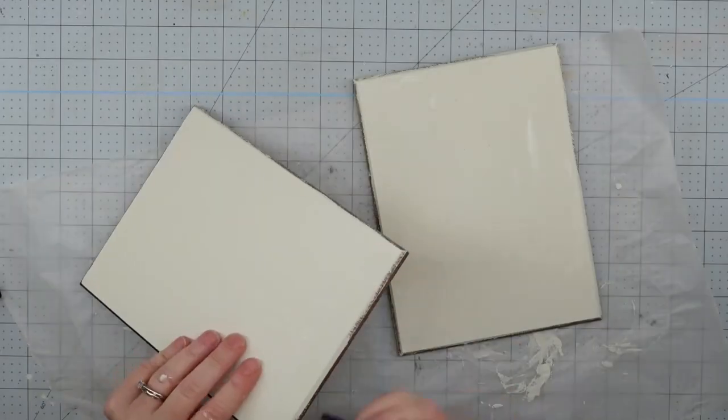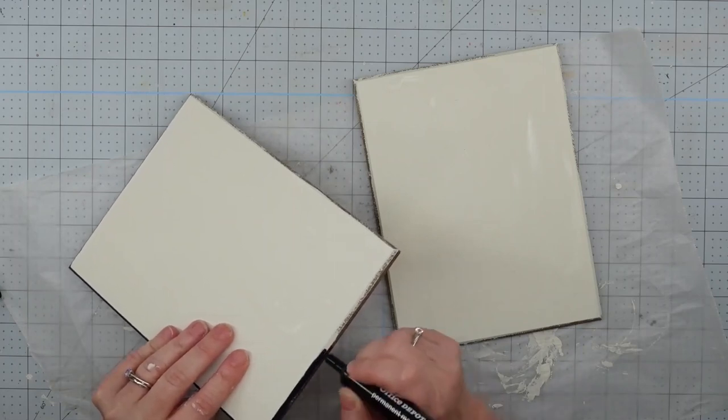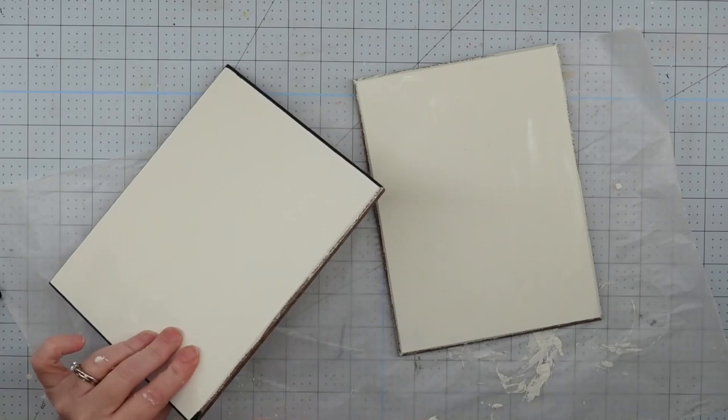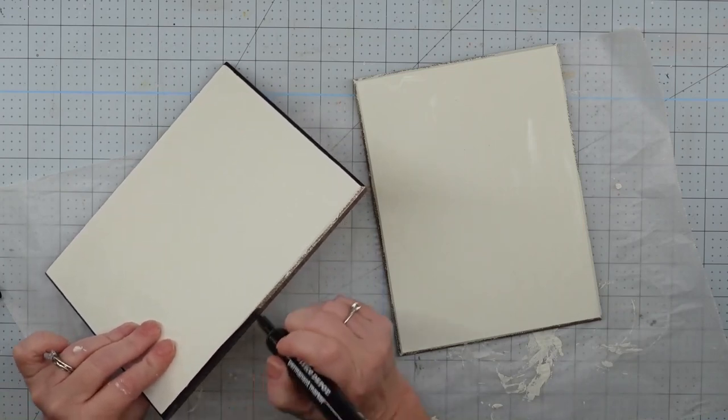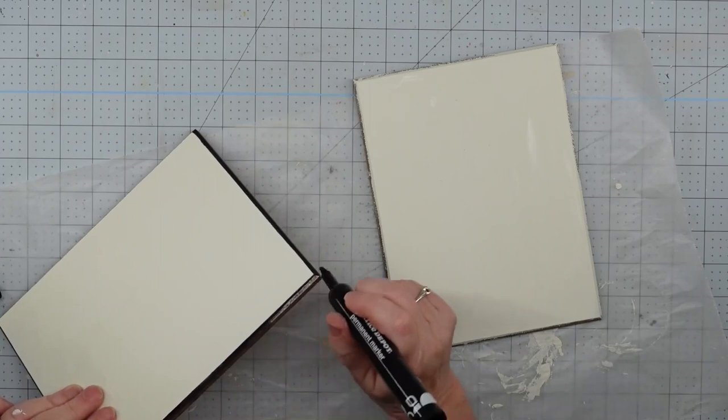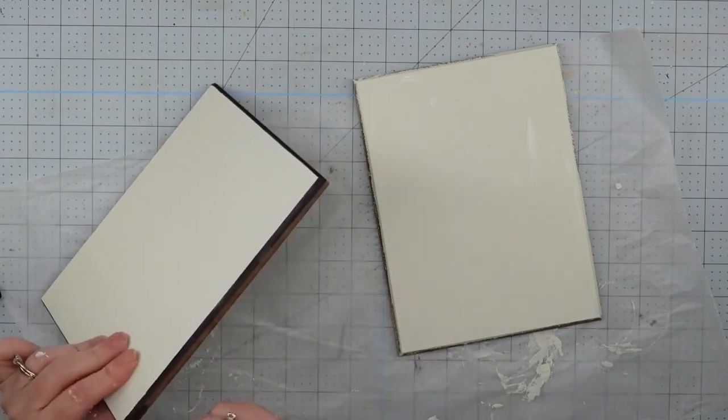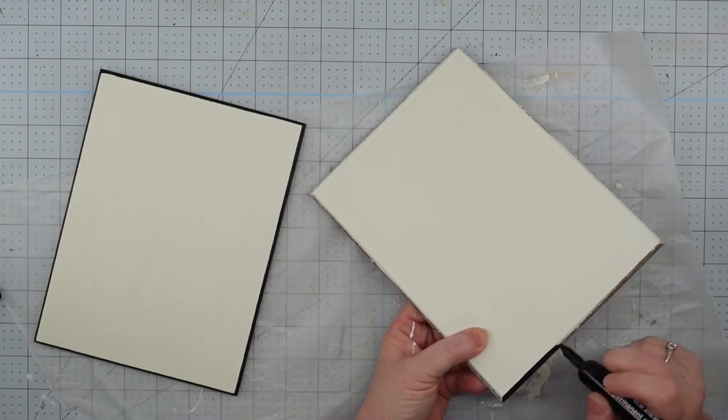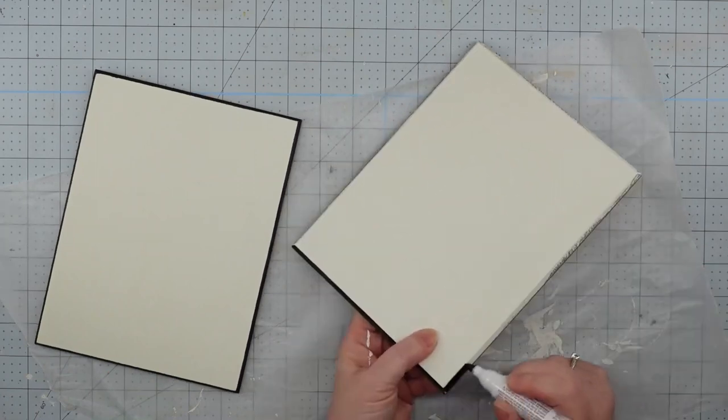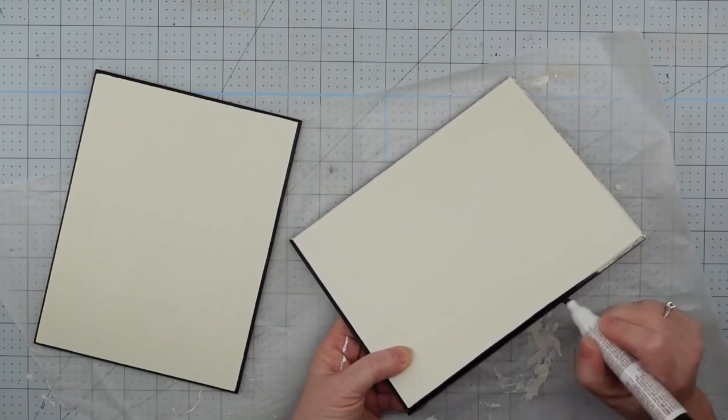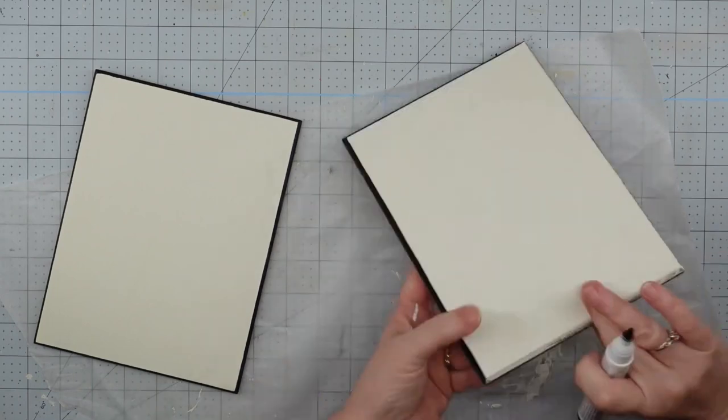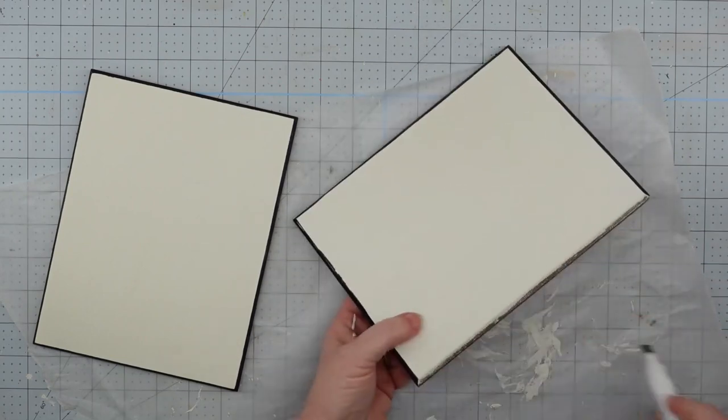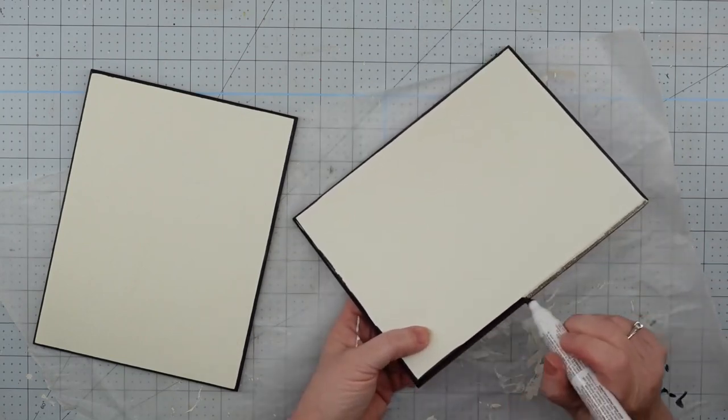Once our paint was dry, I wanted the sides of this to be black. I started to use paint and a paintbrush, but I was afraid that I would bleed it over to the top. You know how your brush kind of bleeds over—you can see that it did it here with the plaster paint—and I didn't want that to happen. So I just grabbed a black permanent marker and this worked perfectly. It filled in so easily and it looked great, and I didn't have any bleeding whatsoever. So I did all four sides of both of my pictures and then I moved on.